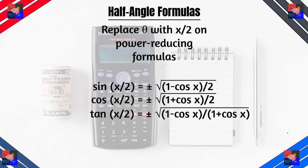Similarly, cosine(x/2) equals plus or minus √((1 + cos x)/2), and tangent(x/2) equals plus or minus √((1 − cos x)/(1 + cos x)). We keep seeing this plus or minus term — it's not just a random positive or negative answer like in algebra.